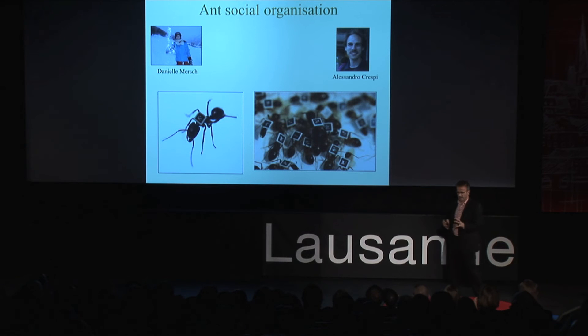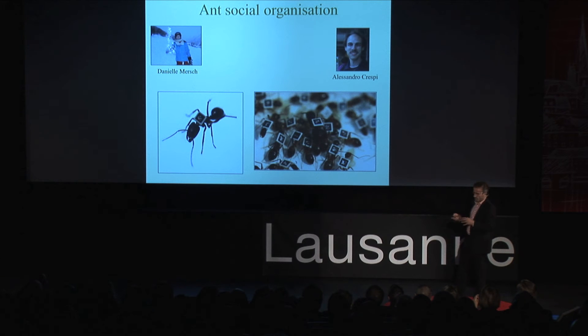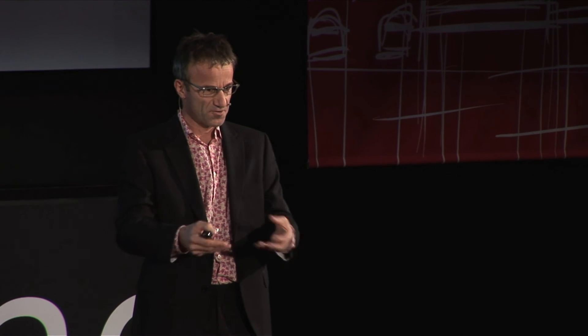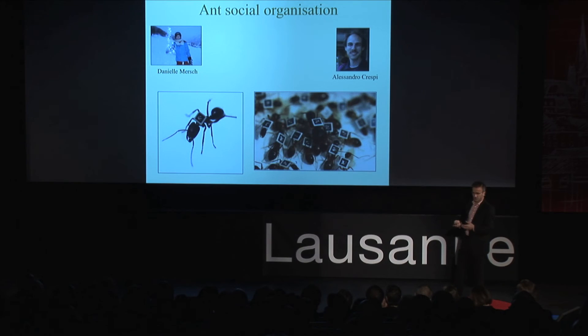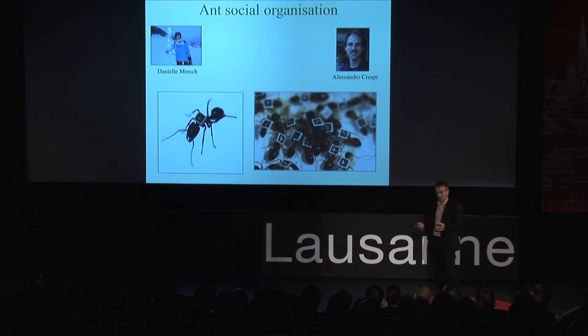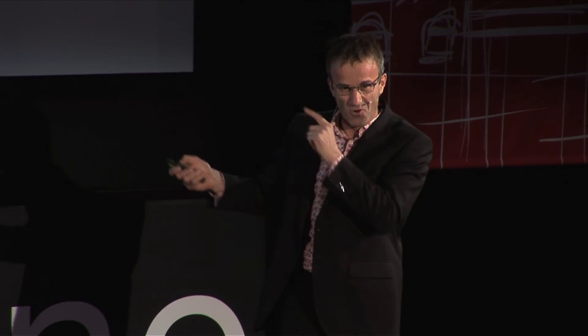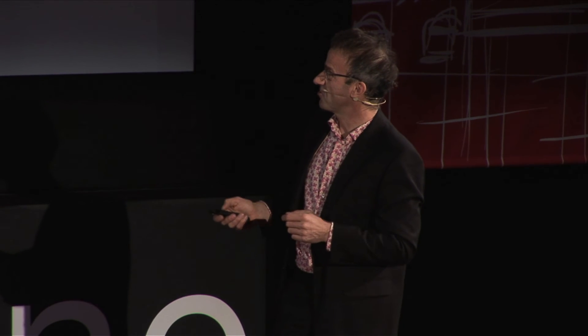To finish, I'd like to mention a few things about current work. Ants are a fantastic system to study behaviour, but you have to follow them, and following them in the colony is very difficult. So we developed a barcode system, which allows us to take pictures every half second in the colony with infrared, so we can follow all ants in the colony and know exactly what each ant is doing at any time.